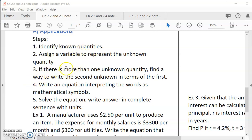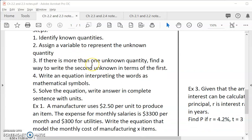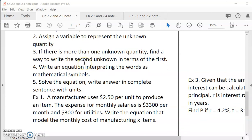And then if there is more than one unknown quantity, we would want to find a way to write the second unknown in terms of the first. And then the most important thing of solving an application is to model it with an equation. So the equation would interpret all the words that is described and then write it in mathematical symbols using multiply, add, or whatever.